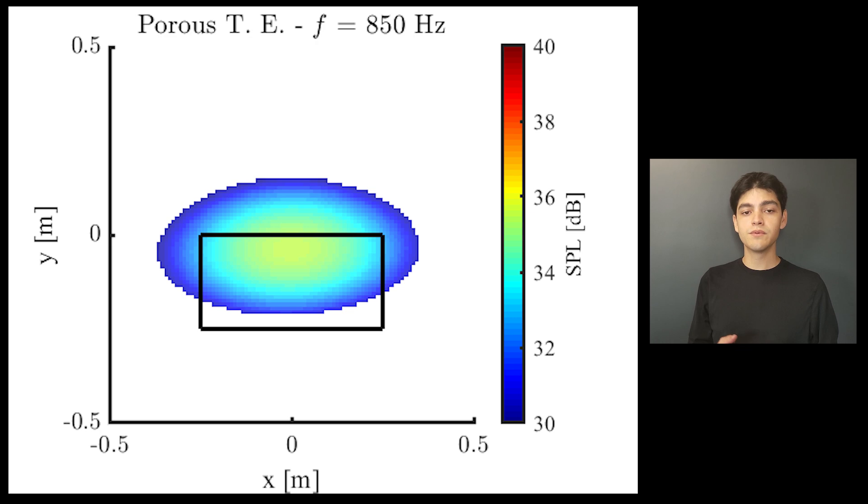And now, when we replace the trailing edge for the porous one, you can clearly see a strong reduction in the noise levels around the trailing edge. Theoretically, you would also see a shift in the noise source towards the solid-porous junction, but given that the insert is not that long, the resolution that we have is not capable of finding this shift.